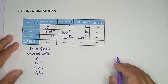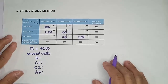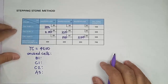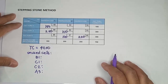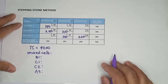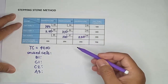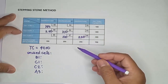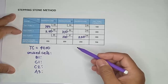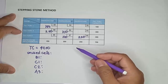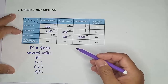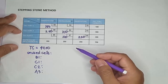For every unused cell, we're going to create loops or closed paths starting from the unused cell, then stepping on the used cells on a vertical or horizontal movement, and going back to the unused cell.